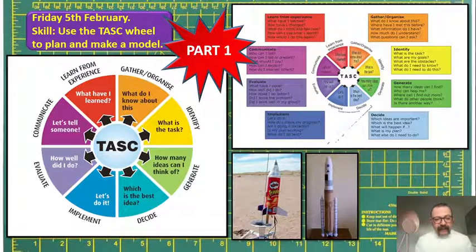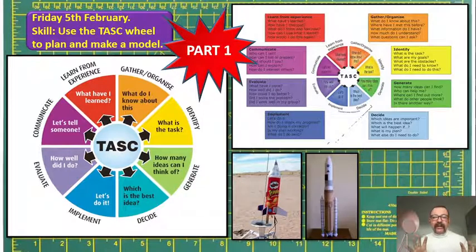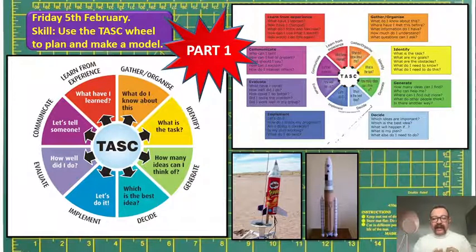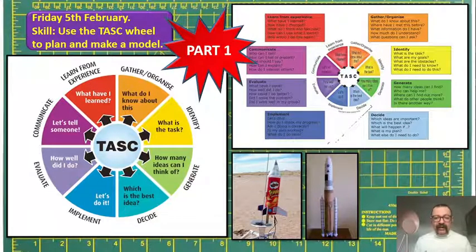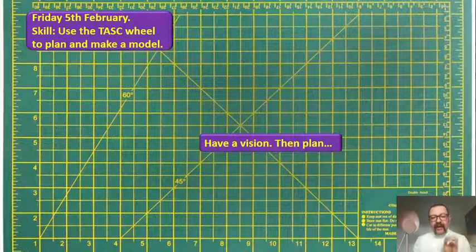The next part of the wheel is: which is the best idea? This is really where I want you to get to today. At this point I'd like you to produce your design — draw a plan of your spacecraft. It could be a moon buggy, a space station, or a rocket — it's entirely up to you. If you're doing a space station, have a look at something on ISS. Have a vision, then do your plan and decide your best idea.